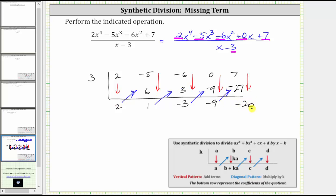This last row gives us the result of the division. And because we have a degree four polynomial divided by a degree one polynomial, because four minus one is equal to three, the result is a degree three polynomial. Starting from left to right, this means the quotient is two x to the third plus one x squared minus three x minus nine, and the negative twenty is the remainder.